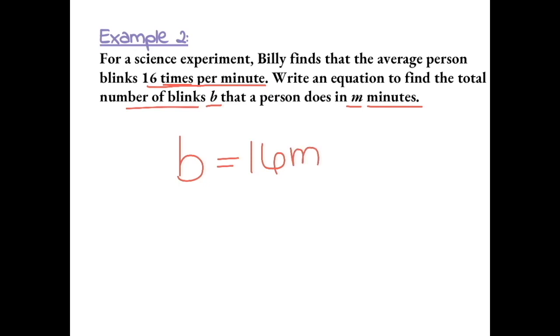Because we don't know the number of minutes they're blinking for, we'll just write 16m. So this is the equation that represents the number of blinks that a person does in m minutes.